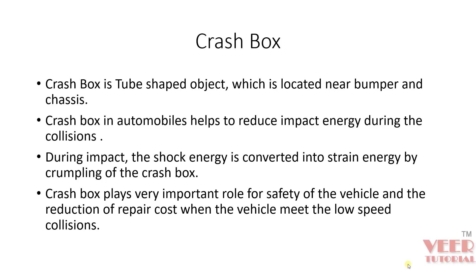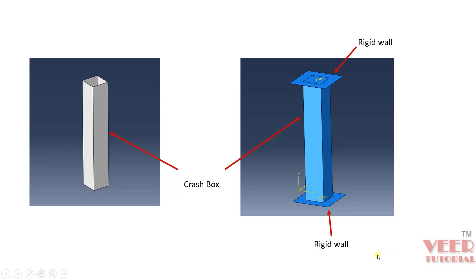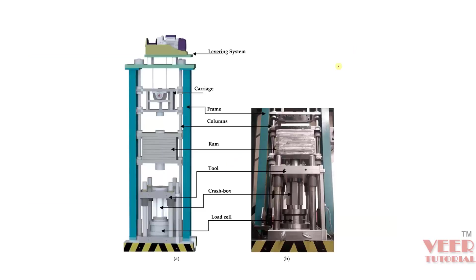First we are going to learn about its physical testing. The crash box taken in this analysis is square in profile. We have used a rigid wall on the top and bottom, and defined the contact between them. This is a basic setup for testing a crash box. Inside the testing machine, the crash box is placed at a specific location. From the bottom it is fixed, and from the top it is also fixed.